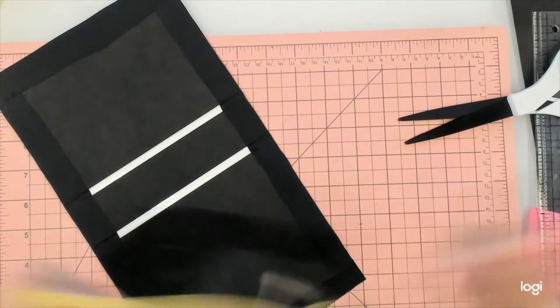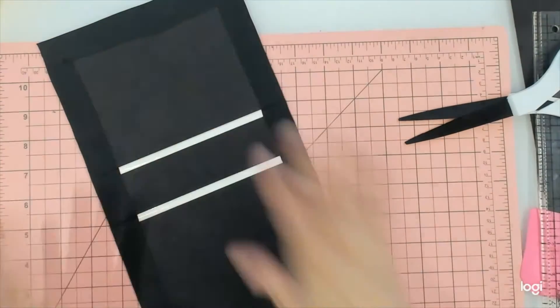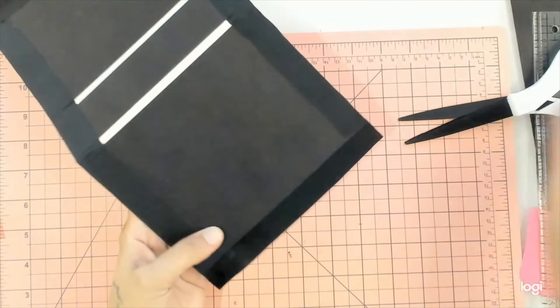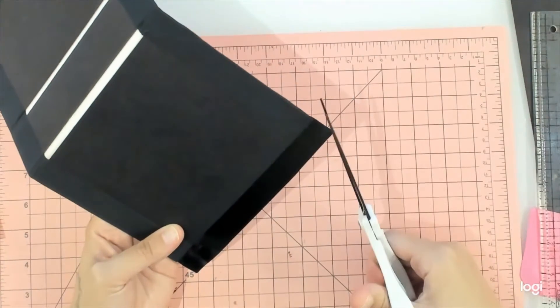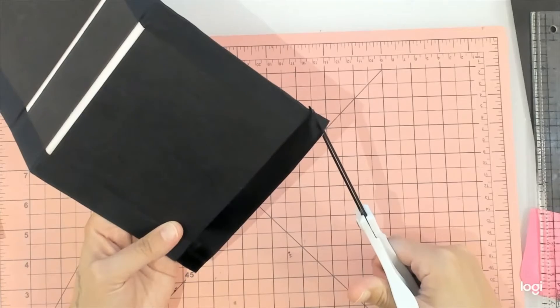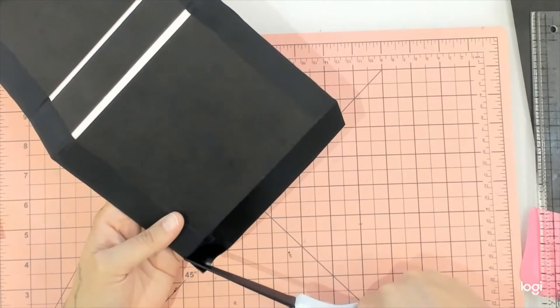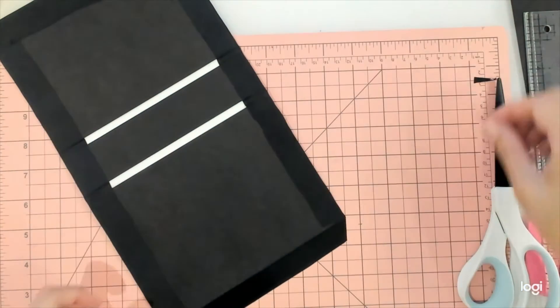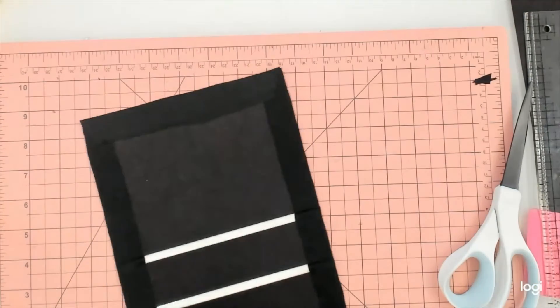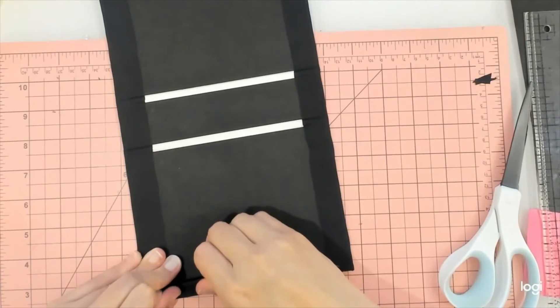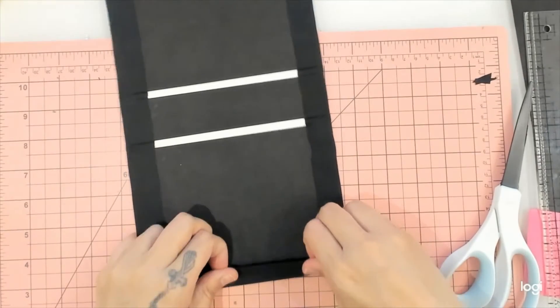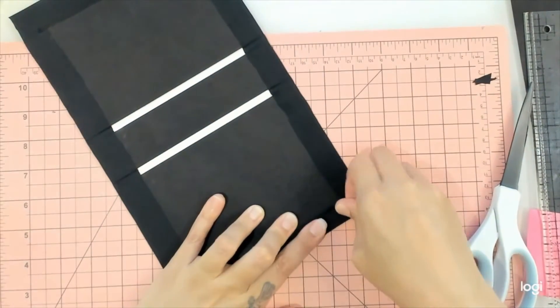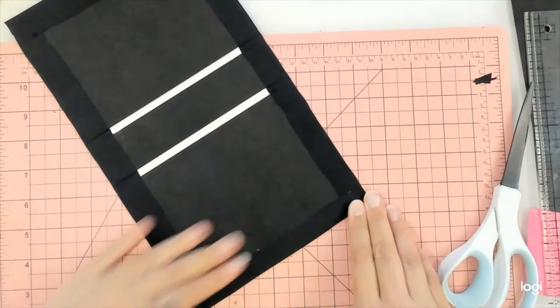Obviously when you get used to it, you're going to be like Kathy - you can just take all the backs off, stick them all down perfectly the first time. But that is not the case for me. This is my first time, so I'm taking my time. Now I need to pull and stick, pull and stick, and pull and stick. Perfect.